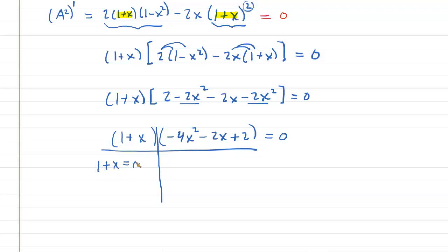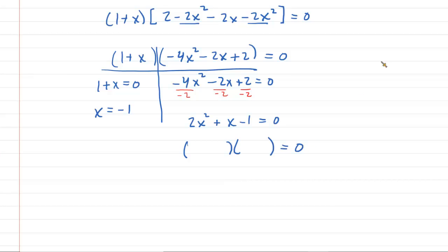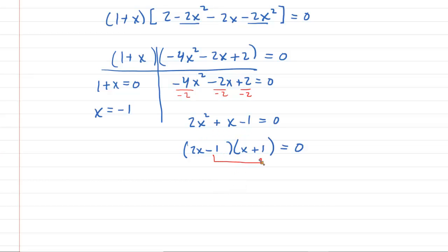Setting each factor equal to zero: from 1 plus x equals 0, we get x equals negative 1. The remaining quadratic, after dividing by negative 2, becomes 2x squared plus x minus 1 equals 0, which factors as 2x minus 1 times x plus 1 equals 0. This gives x equals 1 half and x equals negative 1 again as a repeated root.